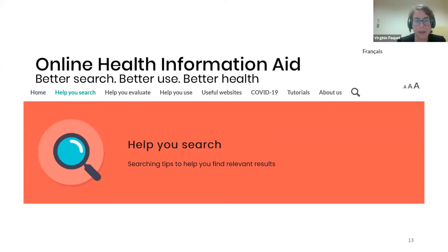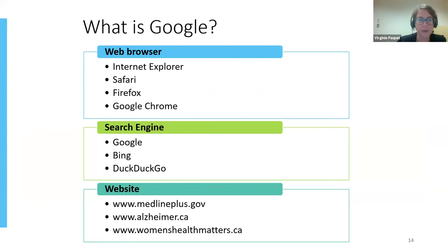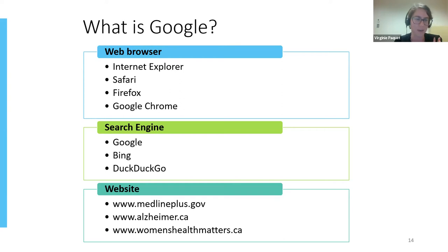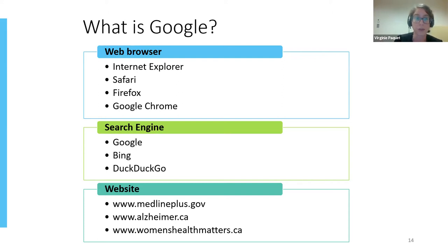When we think about searching on the internet, obviously the first thing that comes to mind is Google. In the first section of our website, we explain what Google is. As some of you may know, Google is not a web browser — it's what we call a search engine. It searches for other websites, and you use keywords to try to get the information you're looking for.